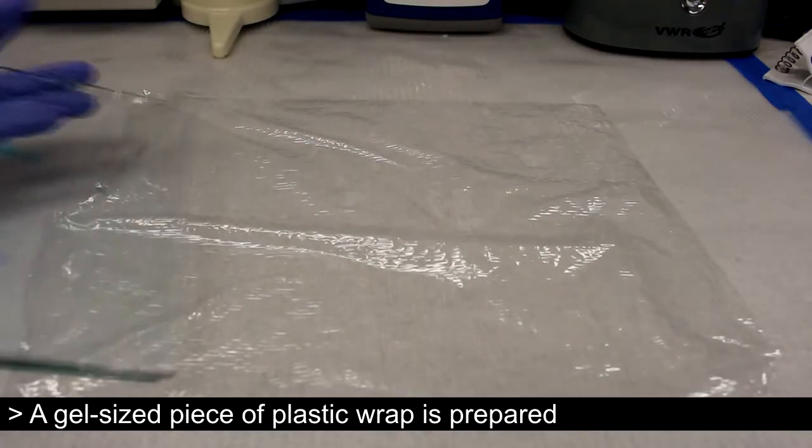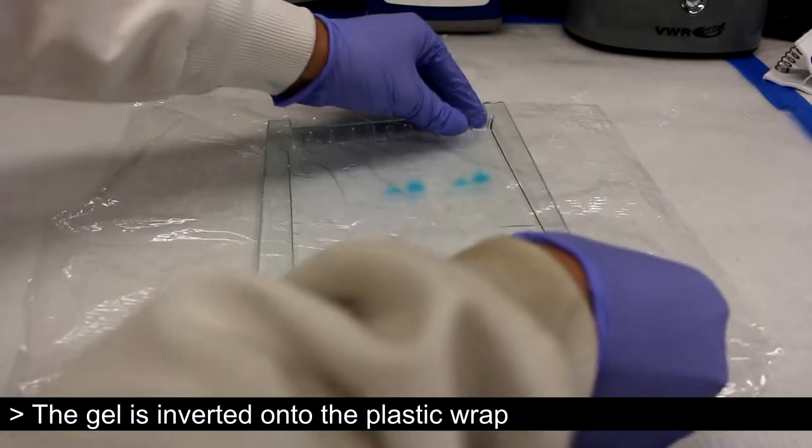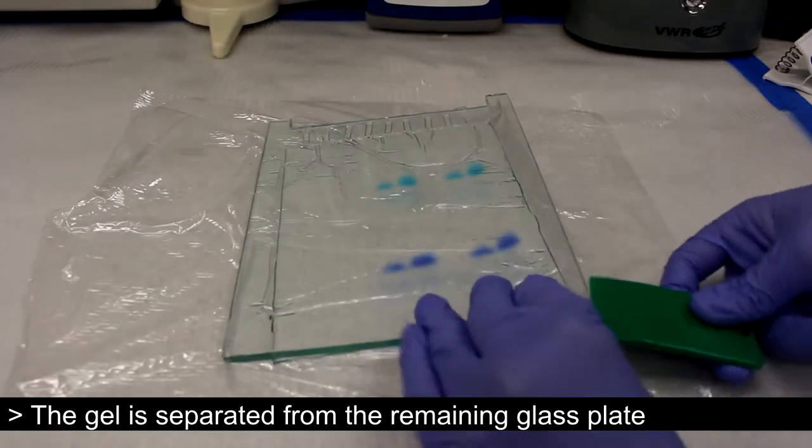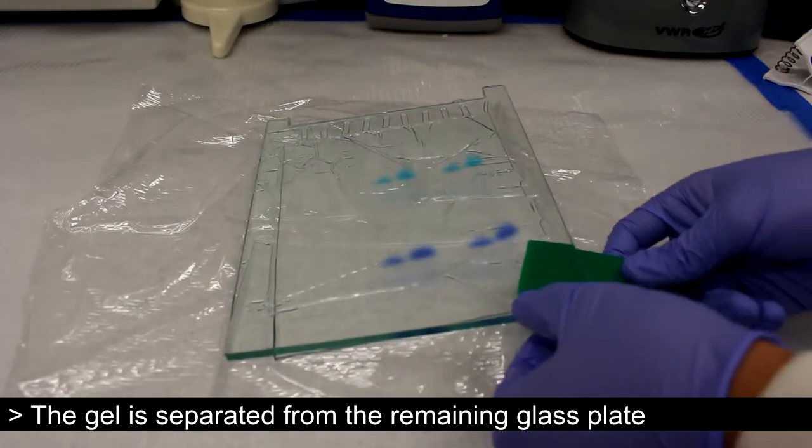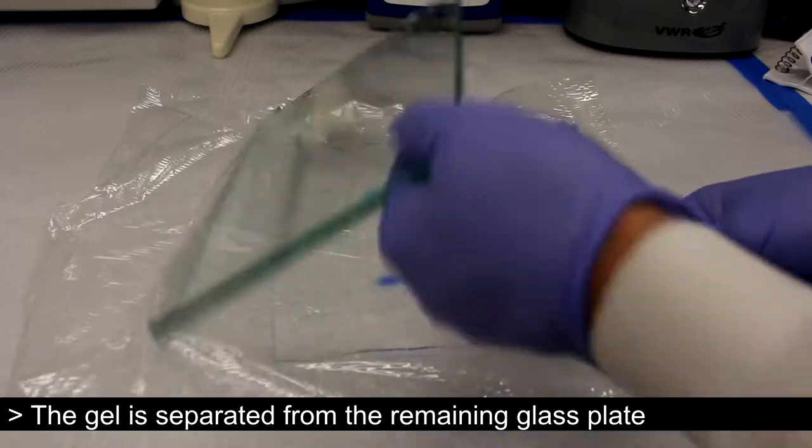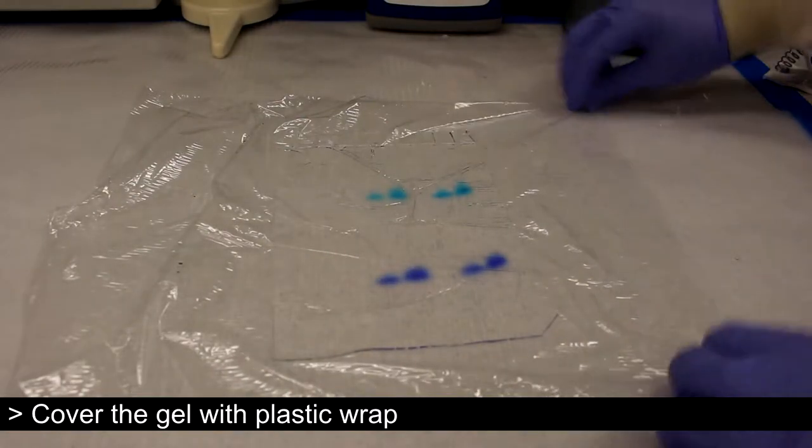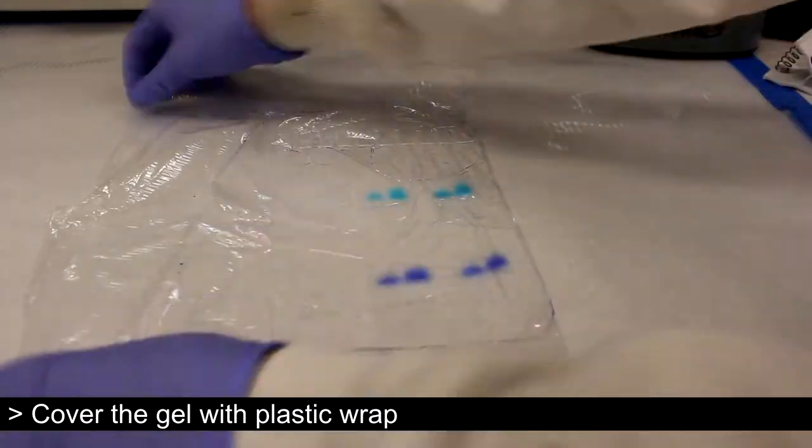A piece of plastic wrap is prepared to which the gel is placed. The gel is then separated from the remaining glass plate. A corner of the gel is cut away to mark orientation. The gel is then wrapped up.